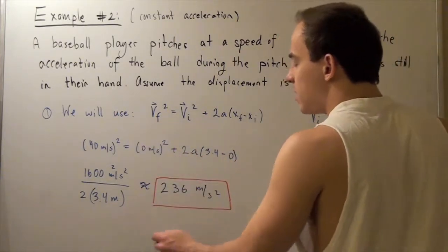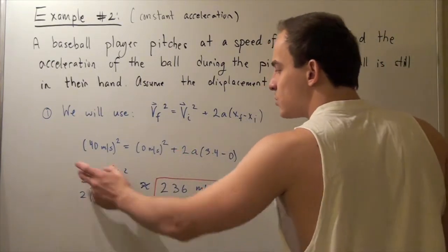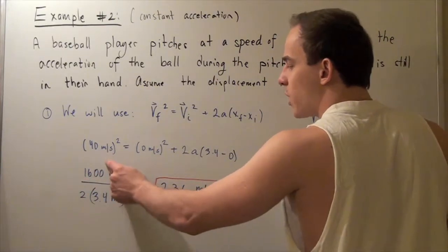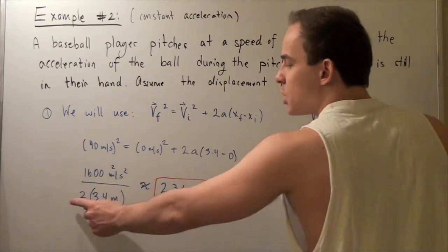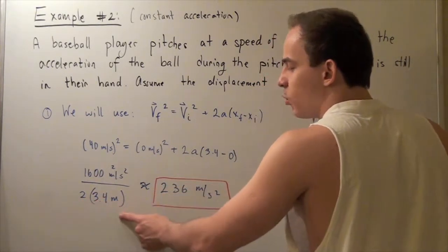This cancels out, and we can bring the 2 and the 3.4 to this side, so we can divide through. We get 1,600 meters squared divided by 2 times 3.4 meters, which is simply 6.8.